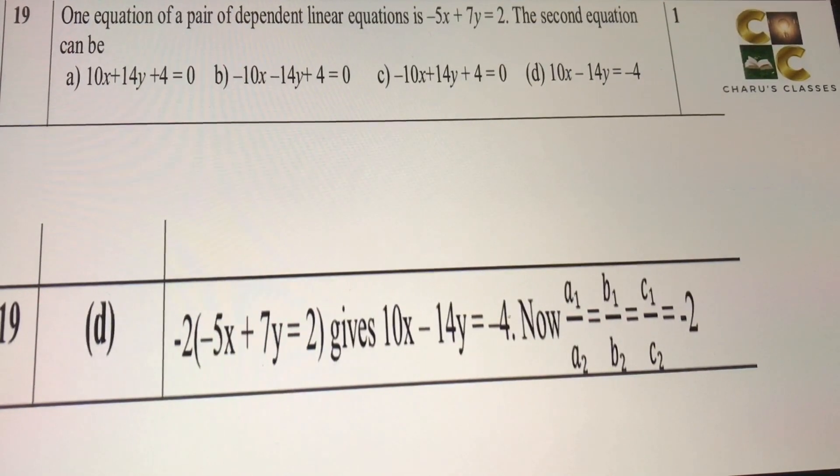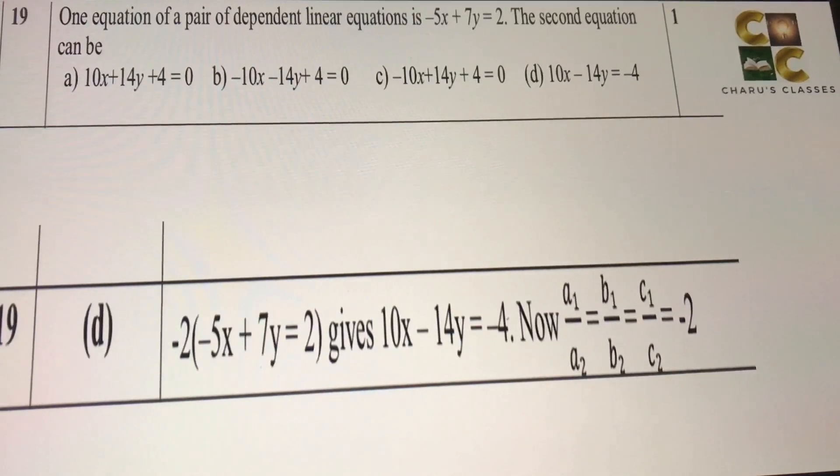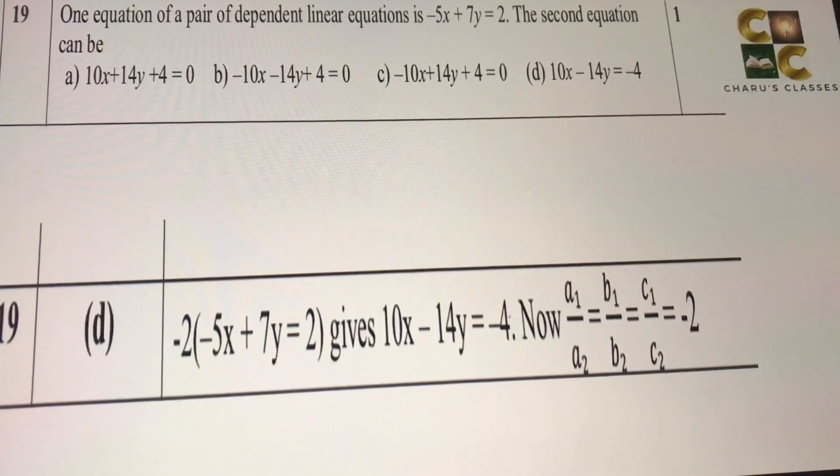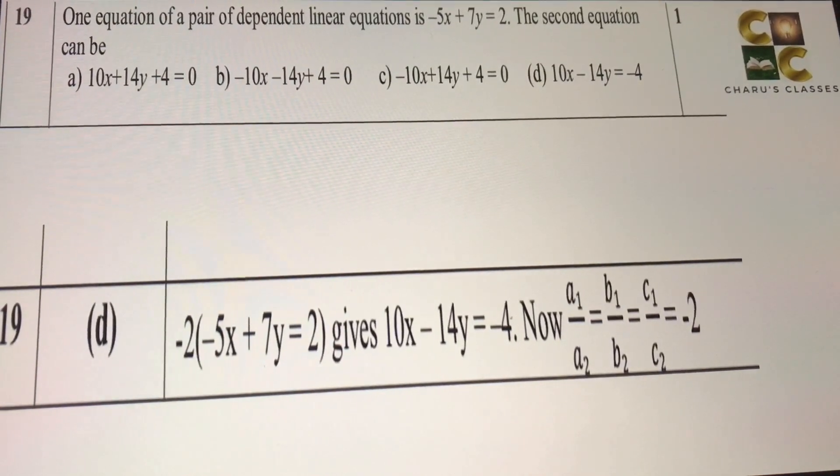So we just have to check in these equations which are given here. And you are getting your answer in D. So when you do that, you are getting a constant as minus 2. So that is giving the answer as D.